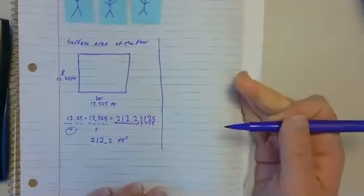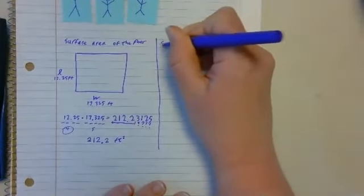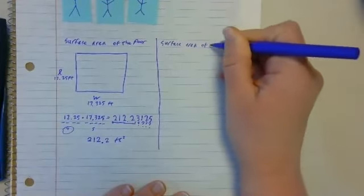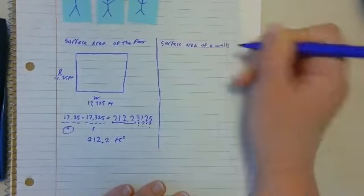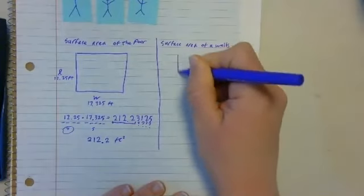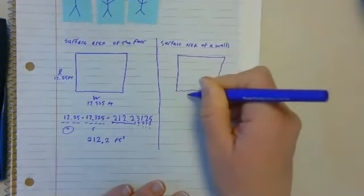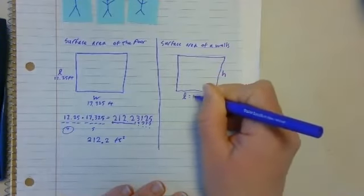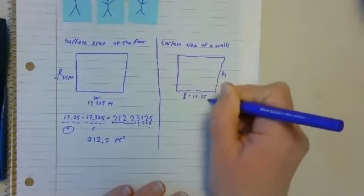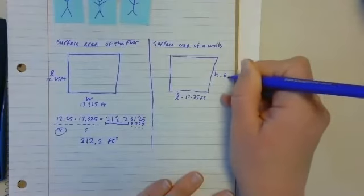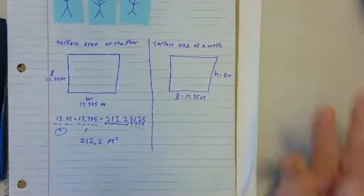I'm going to do another example that uses one of Steve's measurements. So if we need to find the surface area of one of the walls, we'll use Anya's measurements. So we'll have one that's length times height. Anya found that it was 12.25 feet and Steve was only able to give us one digit of significance. He found that it was eight feet high.